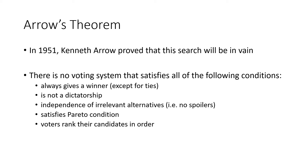The five conditions are: the election method always gives a winner, except for ties; is not a dictatorship — in other words there's not just one voter that decides the outcome of the election; has the independence of irrelevant alternatives condition, or in other words there are no spoilers, that it doesn't suffer from the spoiler effect; it satisfies the Pareto condition, meaning if all voters prefer one candidate over another candidate then the other candidate should not be the winner; and voters ranking their candidates in some order.